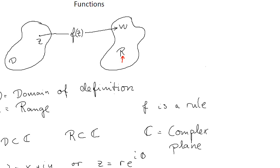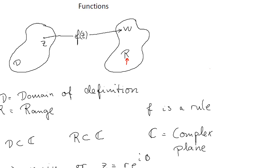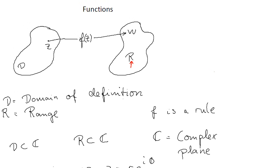Let's recall some aspects of functions. A function is always associated with some definition set and some range, the value set. We can call this the domain of definition, this D, and R is the range.